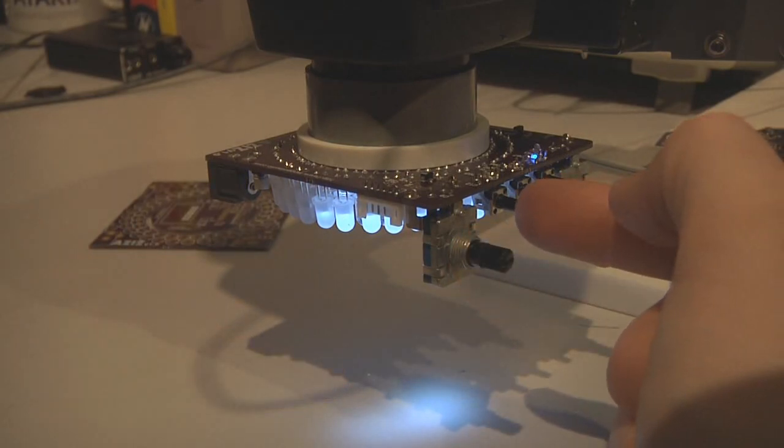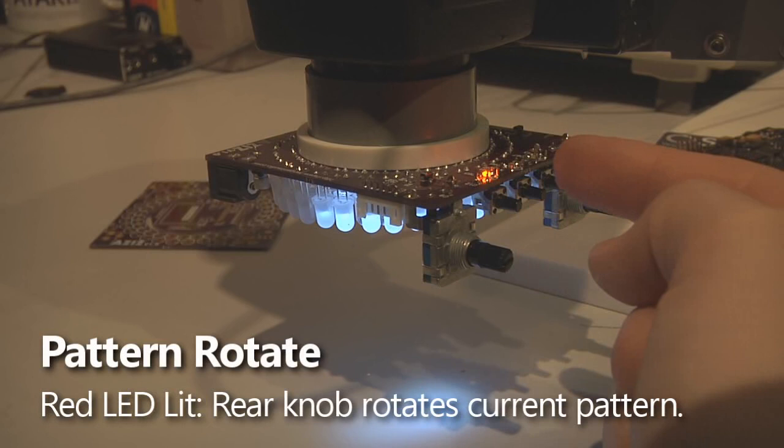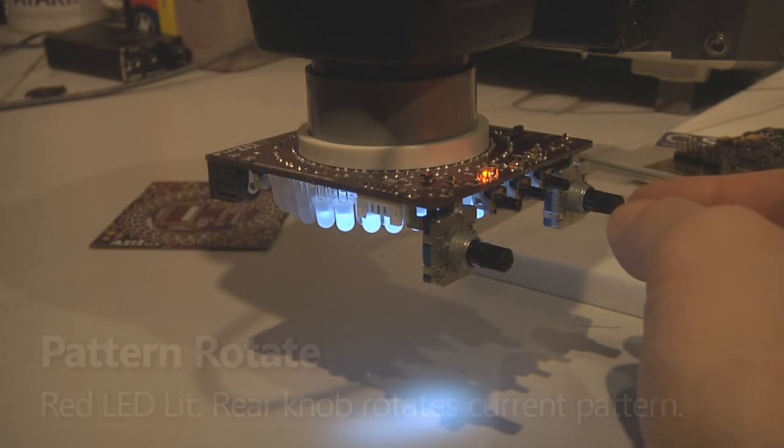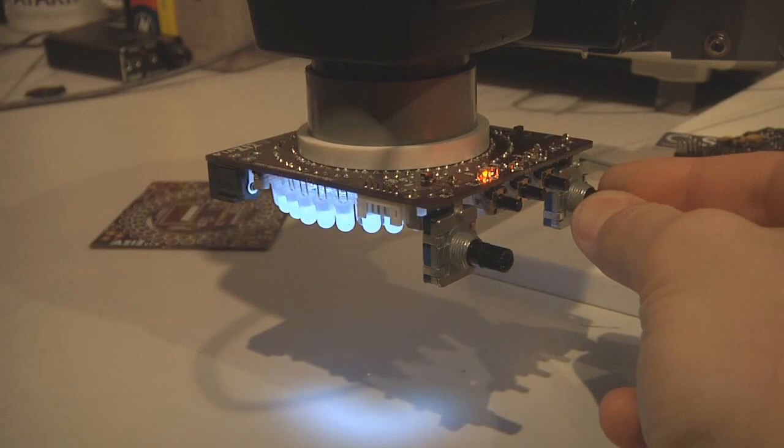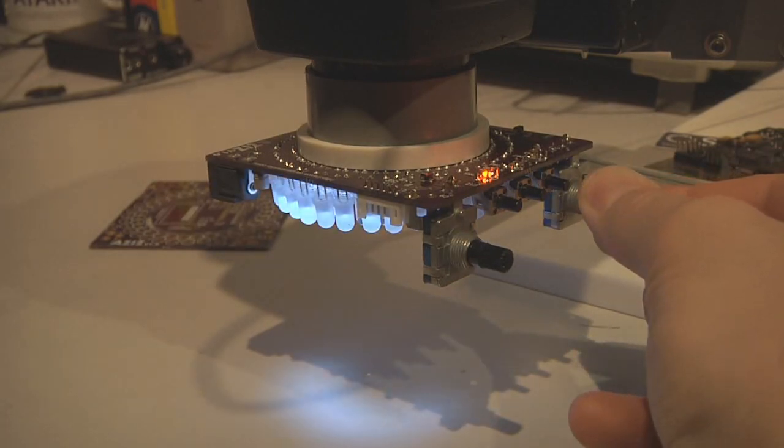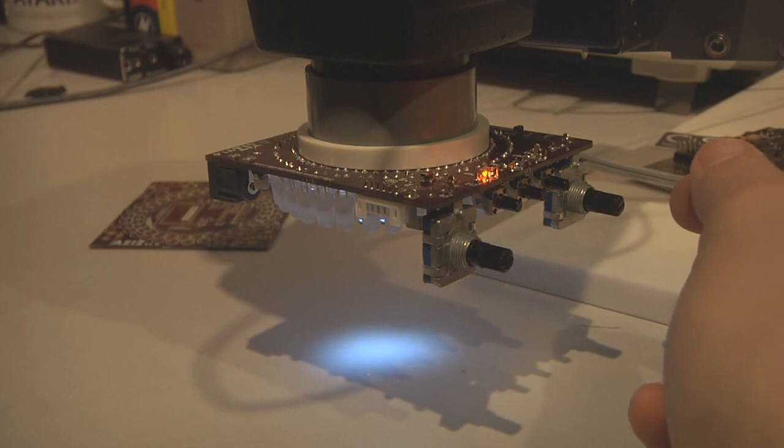Many of the patterns can actually be rotated. To do that, put the Aziz into rotate mode by pushing the front button. You'll see that the red LED lights up, and that changes the function of the rear knob to control rotation of the pattern. You can see that the LEDs move basically in the same direction that you're turning the knob. This allows you to position the currently selected pattern in the way that best illuminates whatever you have under your microscope.